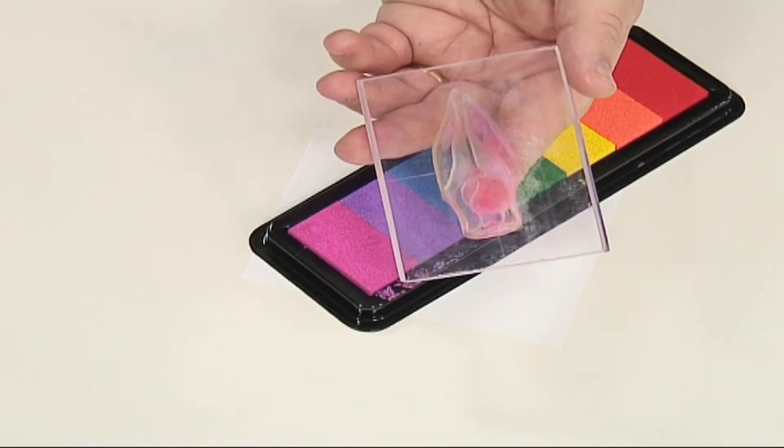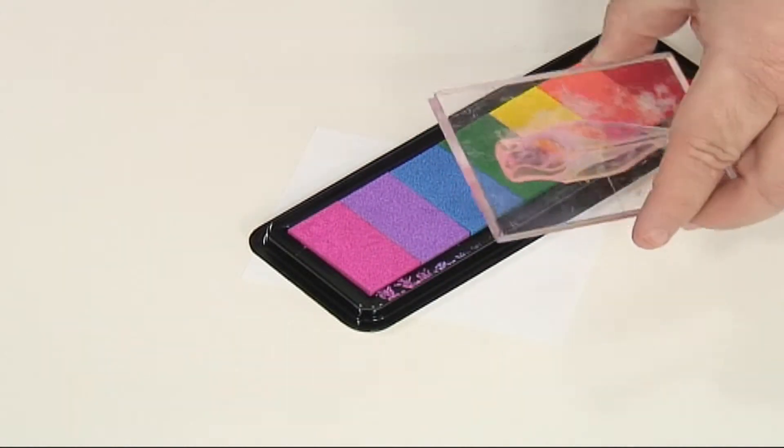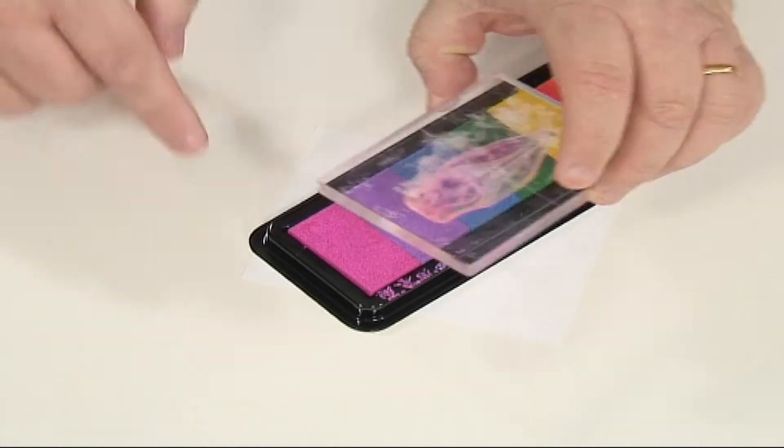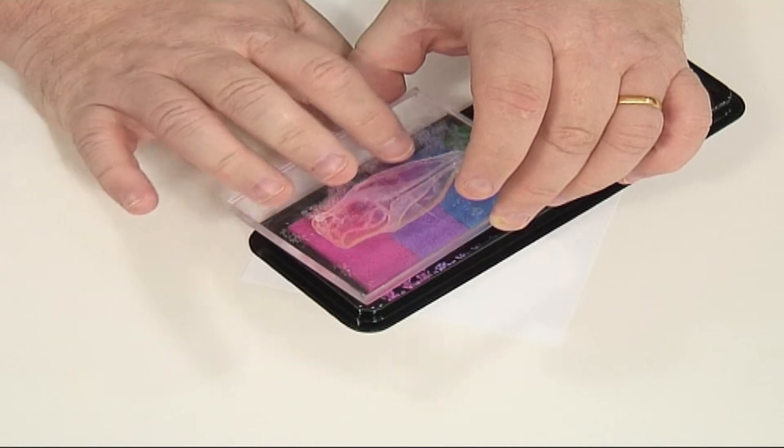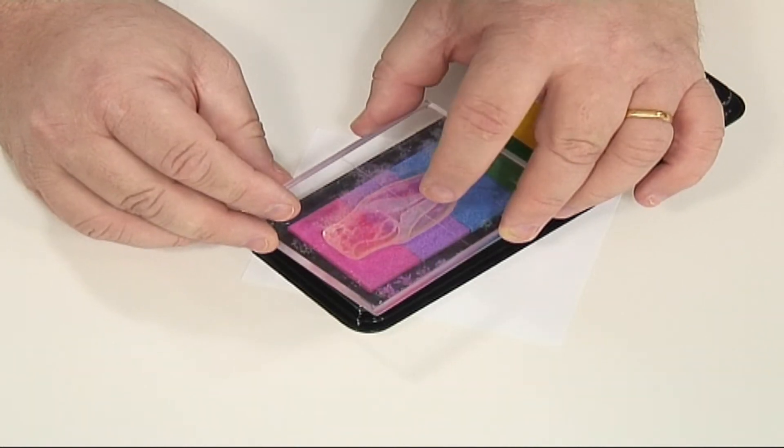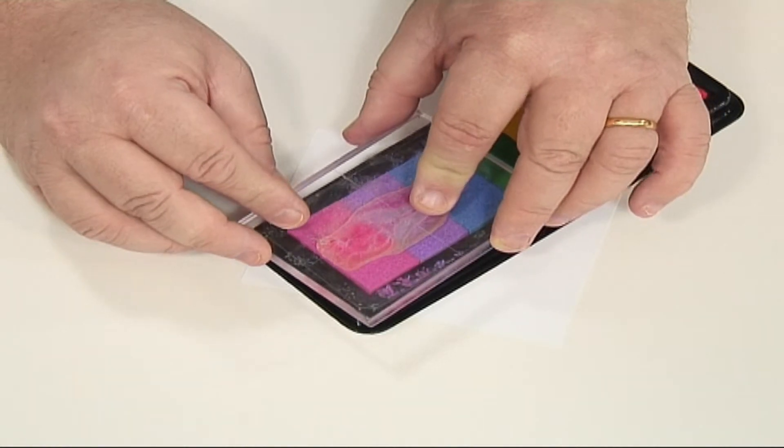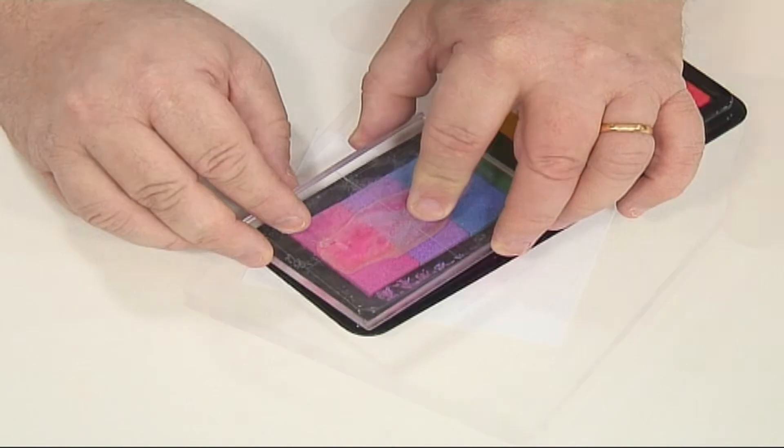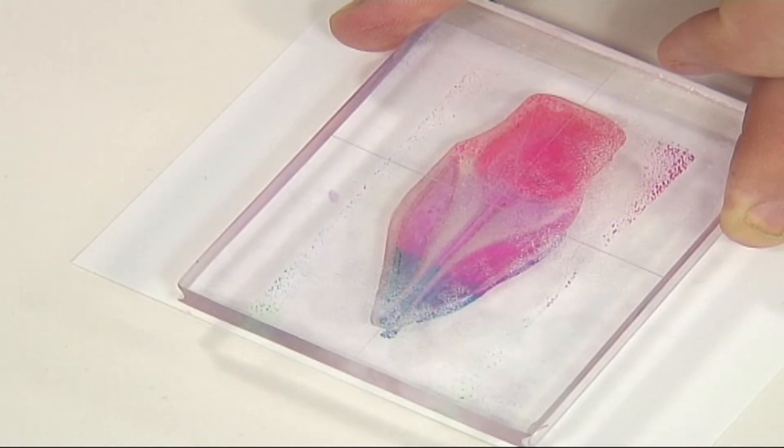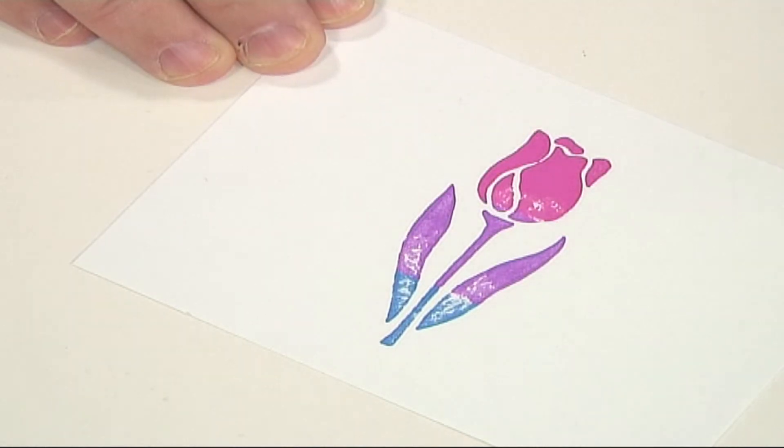Next, I've taken my next stamp, which is the long tulip there. Instead of going that way along the ink pad, I'm actually going to go this way, so I've got a nice pink tulip head there and purple and blue leaves. Just position that up—because it's a clear stamp, it really helps you. Just ink that up and just stamp that into the middle of a rectangle of white card like that. Now do two more tulips either side.